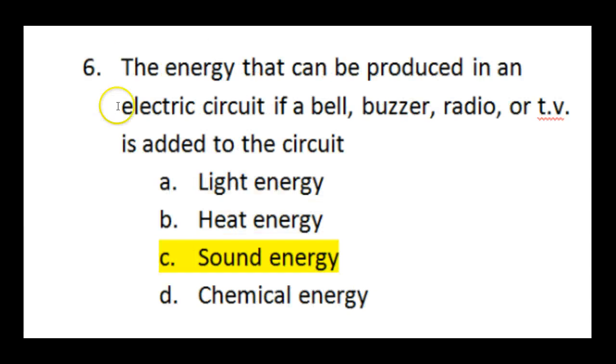Number six talks about the energy that can be produced in an electric circuit. If a bell, a buzzer, a radio, or a TV is added to the circuit. Would it make, would all of these make light? A bell doesn't make light. A buzzer doesn't make light. A radio doesn't maybe make light unless it lights up on a screen. And a TV can have light. But since the other ones don't, light doesn't make sense for this.